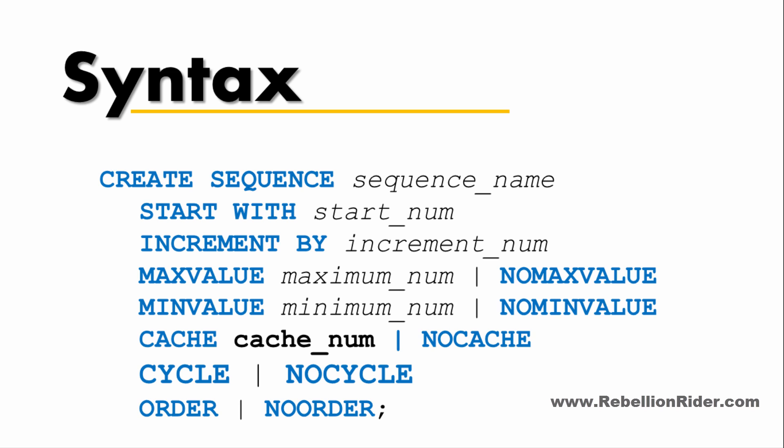Next we have the CYCLE or NO CYCLE flags. If you set the flag to CYCLE then your sequence continues to generate its values after reaching either its maximum or minimum value. You specify NO CYCLE when you do not want your sequence to generate more values after reaching its maximum or minimum value. If you omit both these flags then by default the Oracle engine will set the flag to NO CYCLE.